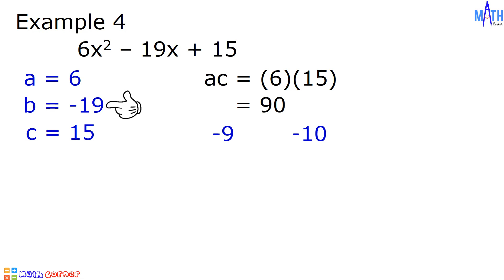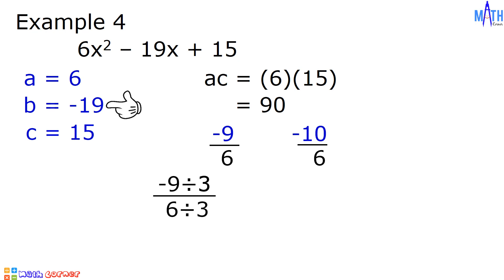Next step, let us divide negative 9 and negative 10 by the value of a. We have negative 9 divided by 6 and negative 10 divided by 6. Let us simplify, beginning with negative 9 over 6. We will divide the numerator and denominator by 3, since 3 is the greatest common factor. We have negative 9 divided by 3, all over 6 divided by 3: negative 9 divided by 3 is negative 3, and 6 divided by 3 is 2. The lowest term of negative 9 over 6 is negative 3 over 2.